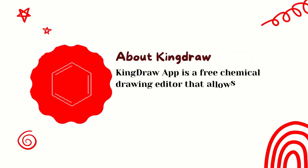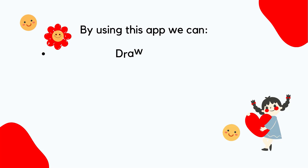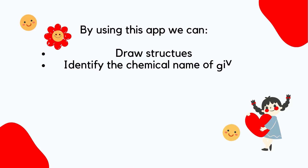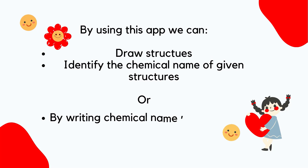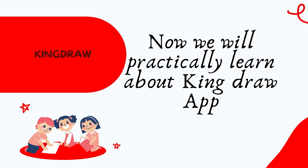Hello guys, today we will learn about KingDraw Mobile Lab. It is a free chemical drawing editor that allows users to sketch molecules and reactions, as well as organic chemistry objects and pathways. By using this app we can draw structures, identify the chemical name of a given structure, or by writing a chemical name we can obtain structures. Now we will practically learn about the KingDraw app.